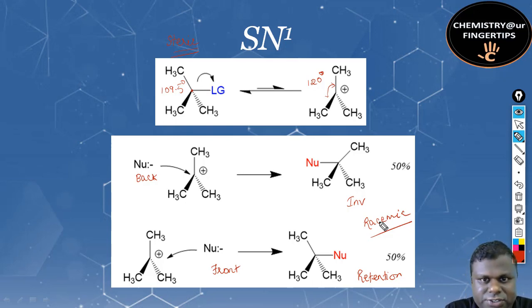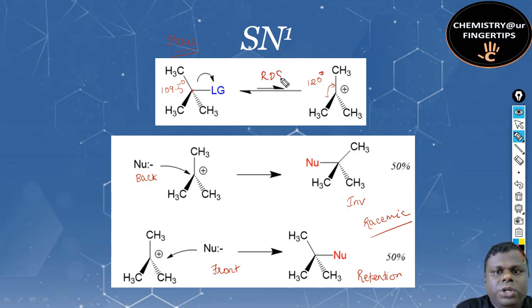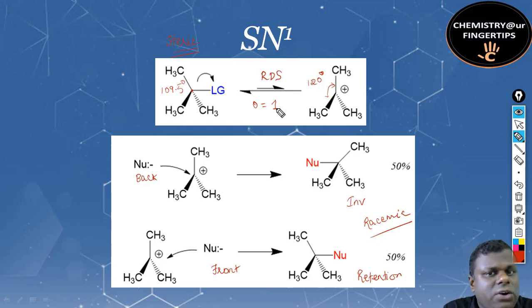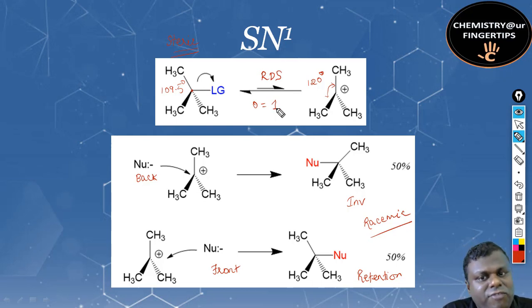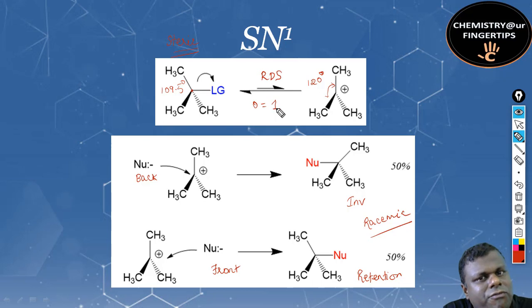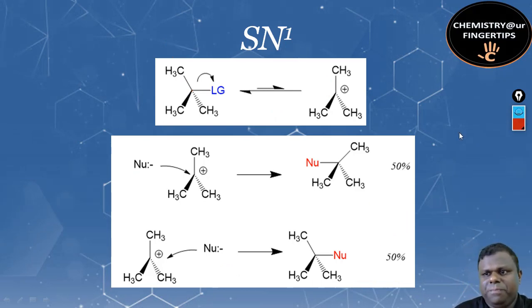In SN1, the slow, rate-determining step involves no nucleophile, so the order of the reaction is one. Increasing the concentration of the nucleophile — ten, hundred, or thousand times — will not affect the rate. Key features to remember: 50% inversion and 50% retention, carbocation mechanism, and the carbocation geometry is planar with a bond angle of 120°.